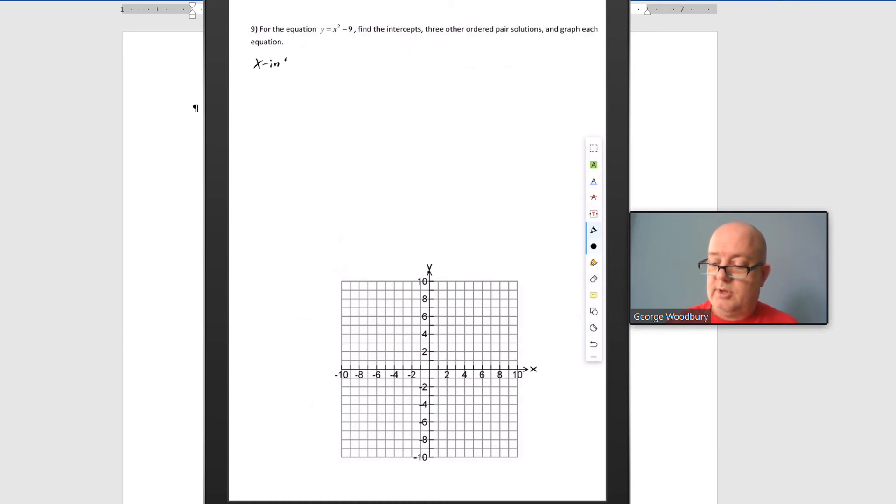The x-intercept where y is 0. 0 equals x squared minus 9. Add 9 to both sides, we get 9 equals x squared. And then we're going to take the square root of both sides. But remember, when we take the square root of that constant side, we're going to use the plus or minus sign. Plus or minus square root of 9 equals the square root of x squared. And after all that, we end up with x equals plus or minus 3. There are actually two x-intercepts here. So when we build our table, 3, 0, and negative 3, 0 are the two x-intercepts.